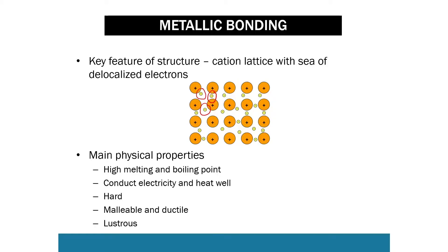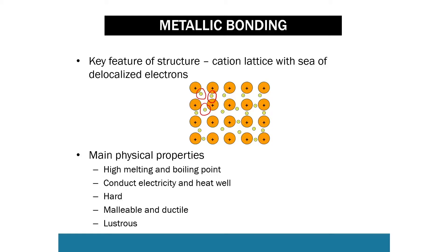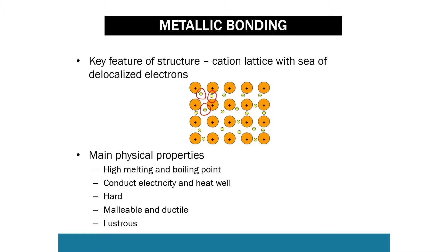Metals are also hard. Again, this is due to strong intermolecular bonding. Metals are also malleable and ductile. Malleable means that they can be bent and moulded into new shapes. Ductile means that they can be drawn into a wire. This is due to the sea of delocalised electrons — when the metal is bent, the electrons move around to keep like charges apart and to hold the metal together tightly.